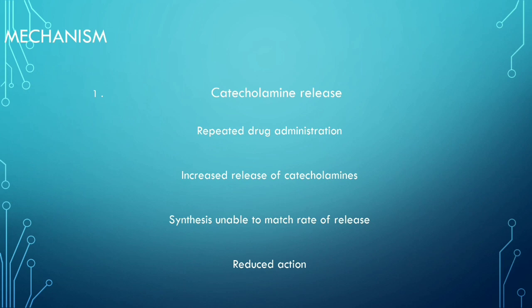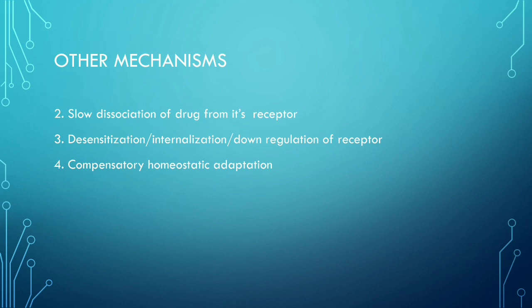These indirectly acting drugs release catecholamines. When these drugs are administered repeatedly in quick succession there is increased release of catecholamines, therefore synthesis is unable to match the rate of release, and therefore there is decreased action. Other mechanisms include slow dissociation of drug from its receptor, desensitization, internalization, downregulation of receptor, and compensatory homeostatic adaptation.